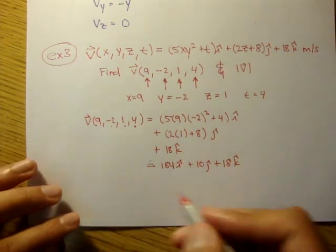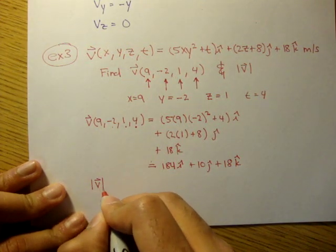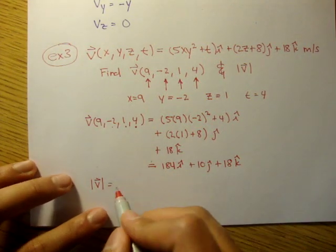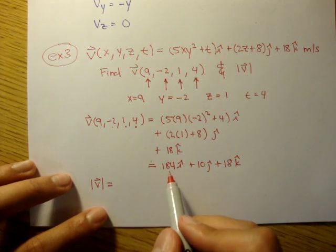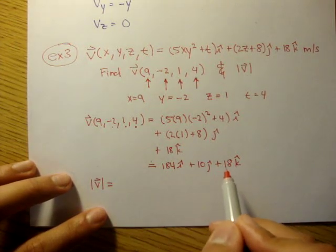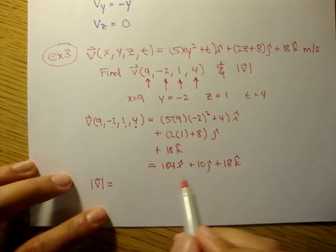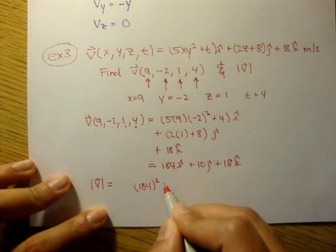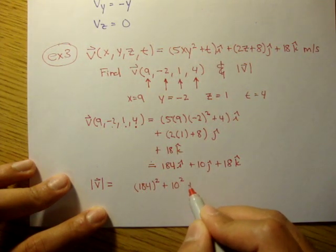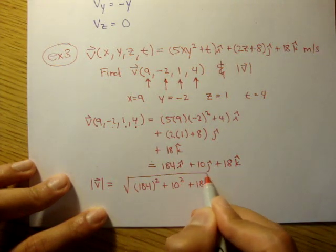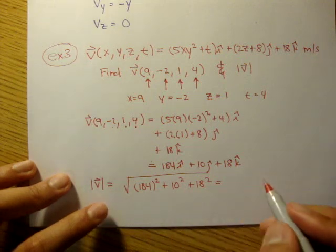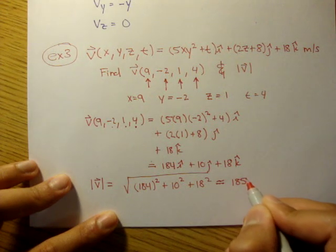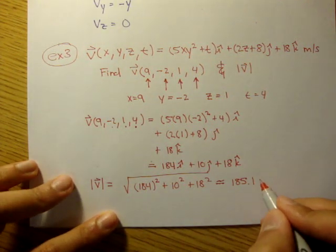Now, we need to find the magnitude. So, the magnitude, you should know how to find magnitude from statics and dynamics. You've had those courses already. So, you know that the magnitude is just the square of each one of these terms, the x, y, and z term, and then all of that added and square rooted. So, it would be 184 squared plus 10 squared plus 18 squared, and all of that square rooted. And you punch that into a calculator, I get about 185.1 meters per second.